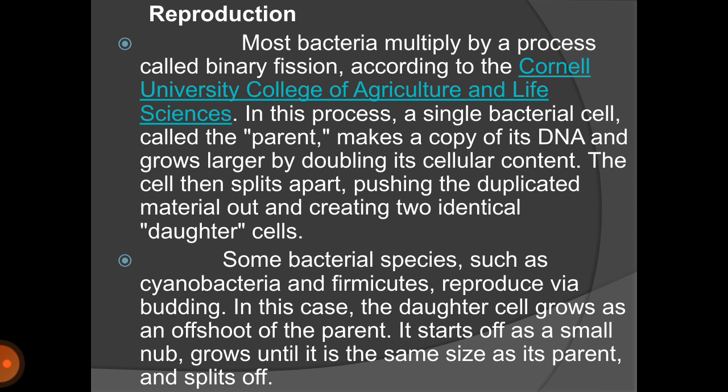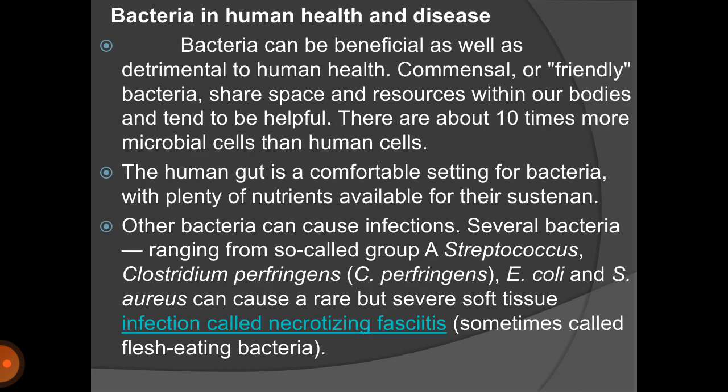Next we will discuss the reproduction of bacteria. Most bacteria reproduce by binary fission. In this process, a parent bacterial cell makes copies of its own DNA, grows larger by doubling its cellular content, then splits apart, pushing its duplicated material to create two identical daughter cells. Some bacterial species also reproduce by budding.